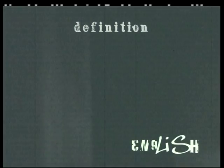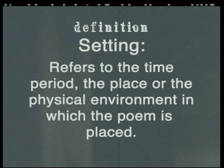Now the next element that we will investigate is the setting of the poem. The setting refers to the time period, the place, or the physical environment in which the poem is placed. Every poem is influenced by what happens in the world around it, so the setting is very important when we try to work out the meaning of the poem. Now the setting is often hinted at in the poem, so write down the clues as to what the setting might be as you read the poem.